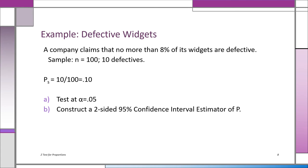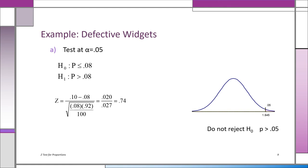HO is P less than or equal to 0.08 — no more than 8%. H1 is that P is more than 8%. This is a one-tailed test, so the critical value is on the right. H1 always points to where you put the critical value. Putting the full 0.05 on the right side, you have a critical value for z of 1.645.